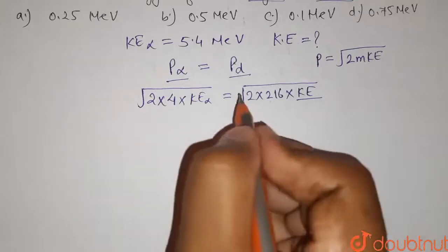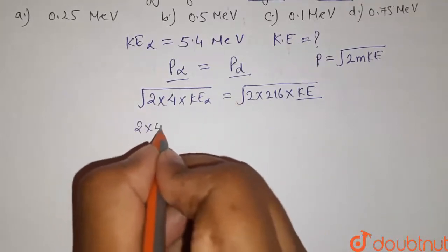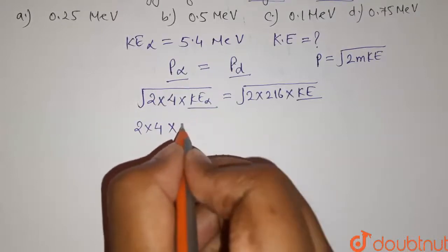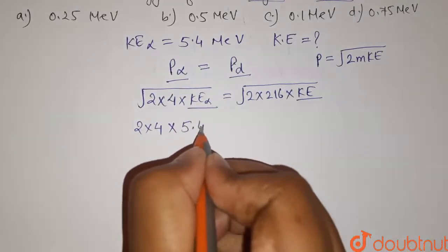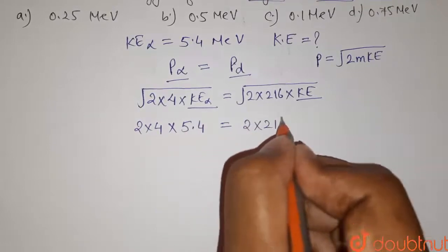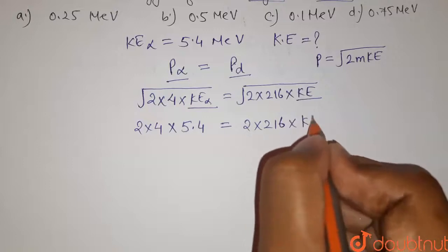Squaring both sides, we have 2 times 4 times the value of kinetic energy of alpha particle, which is given as 5.4 mega electron volts, equals 2 times 216 times KE.